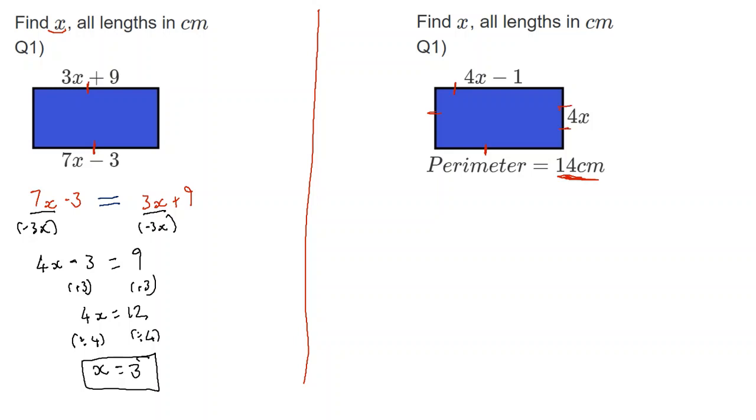So if we just start with this side here. Well, this side is 4x. And then it's got a side which is 4x minus 1. But it's got four sides in total. Then it's got another side which is 4x. And another side which is 4x minus 1. And that is the perimeter. This expression here is the perimeter, and the perimeter is 14. And those two things are the same as each other, so we put in our equal sign.